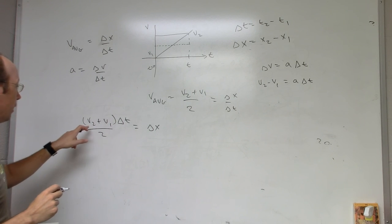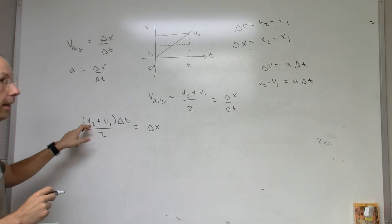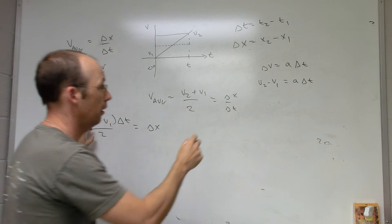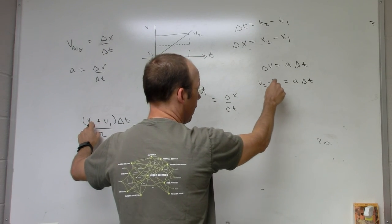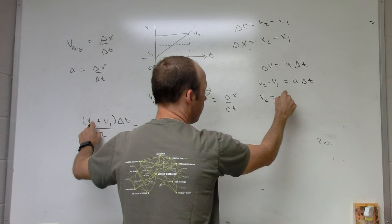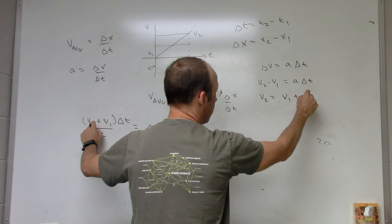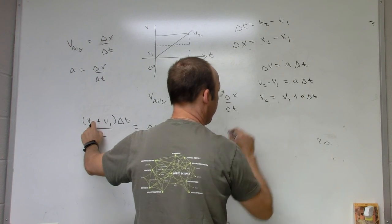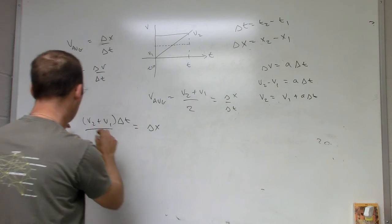Okay, so I can go over here. I don't really want the final velocity in my answer. So I'm going to get rid of that. I'm going to add v1 to both sides over here. v2 equals v1 plus a delta t. That's my final velocity. Now I'm going to put that in over here for v2.